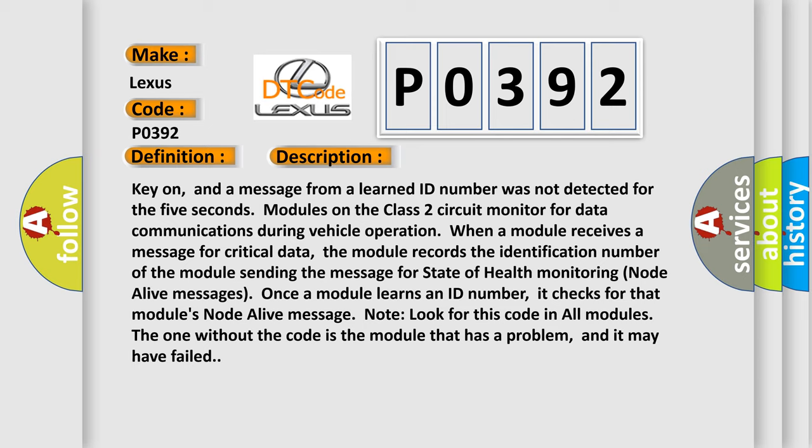Once a module learns an ID number, it checks for that module's node alive message. Note, look for this code in all modules. The one without the code is the module that has a problem, and it may have failed.